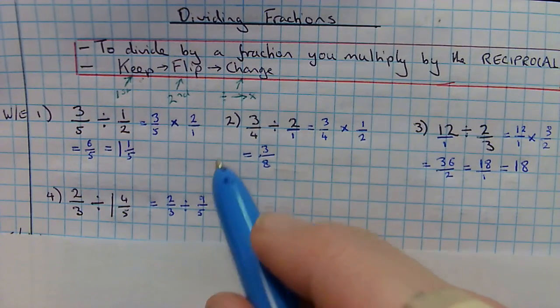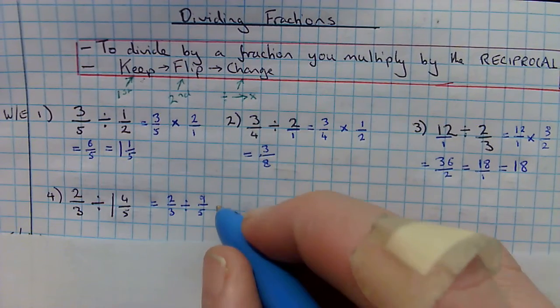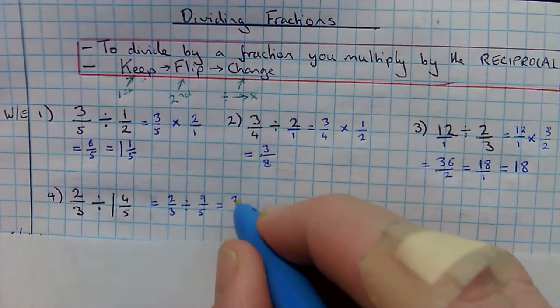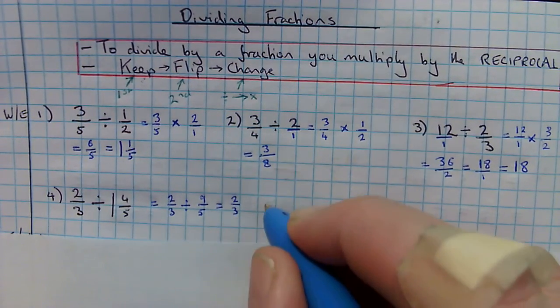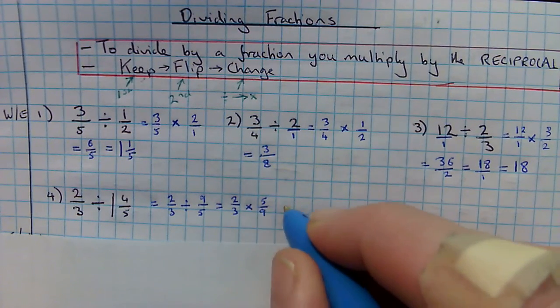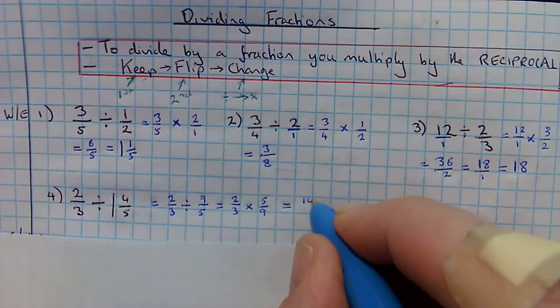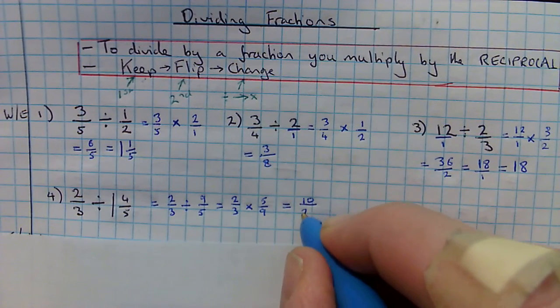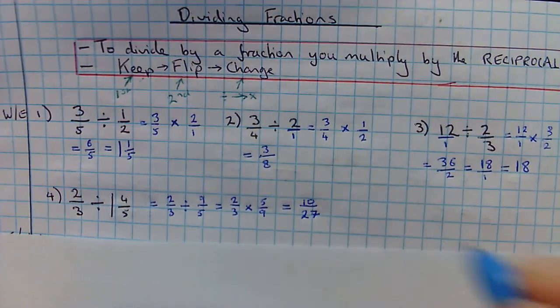Now, I'm going to need to do my keep flip change, which is 2 thirds. The 9 over 5 becomes 5 over 9. And it becomes a times. 2 times 5 is 10. 3 times 9 is 27. Give me my answer of 10 over 27.